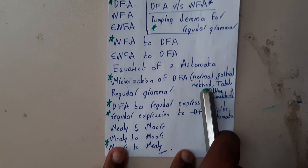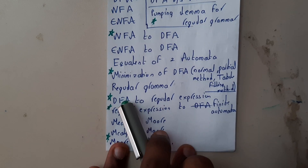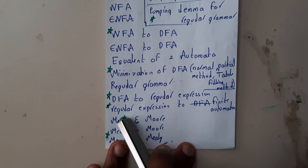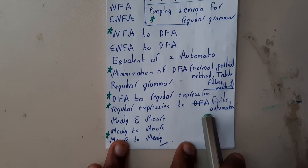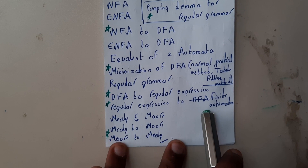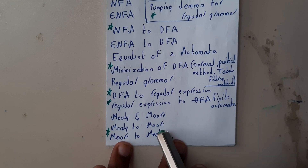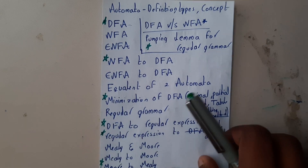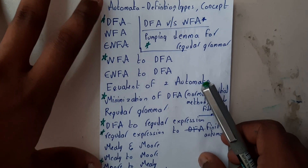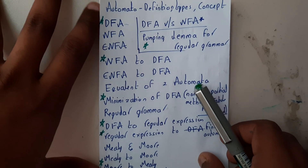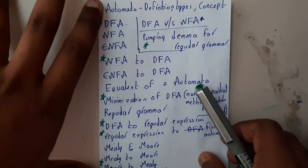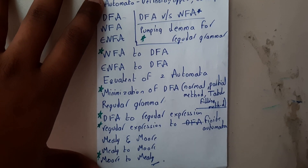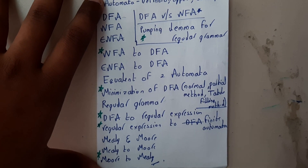Also go through the conversion from DFA to regular grammar, regular grammar to finite automata, and Moore to Mealy and Mealy to Moore conversions. These are the important topics, and all the topics on this small sheet are covered in this playlist.